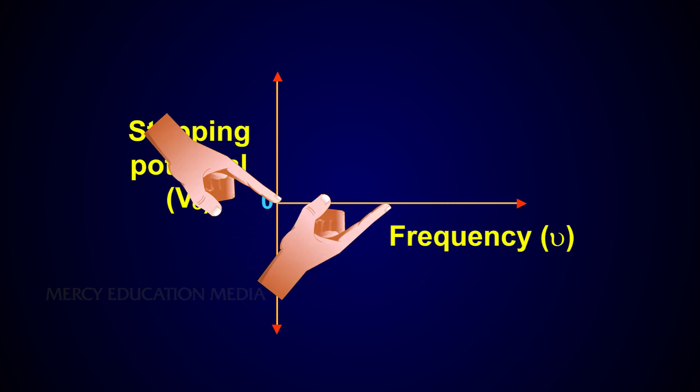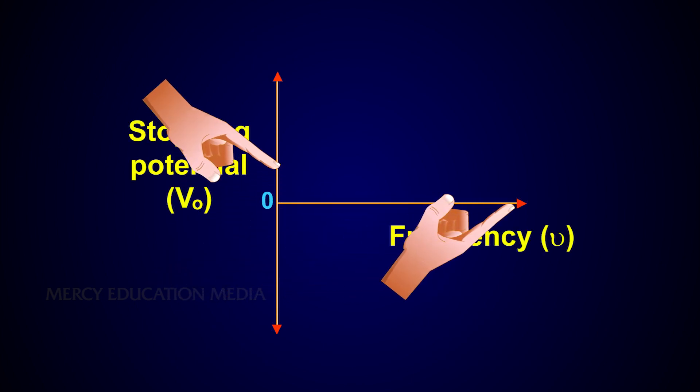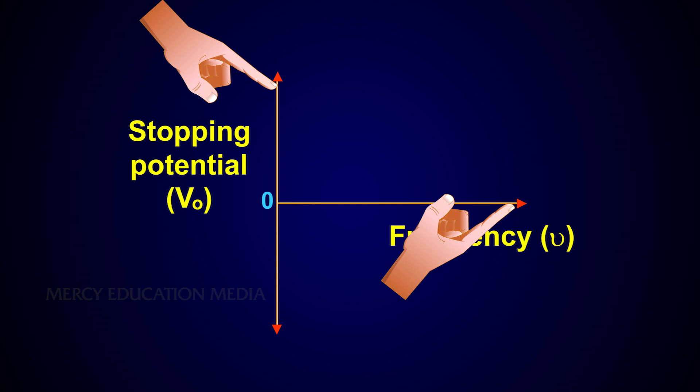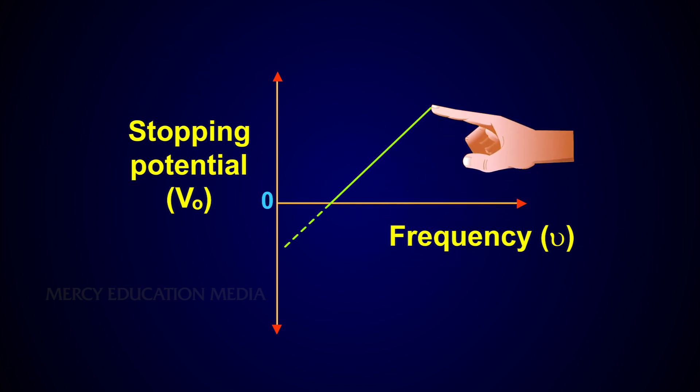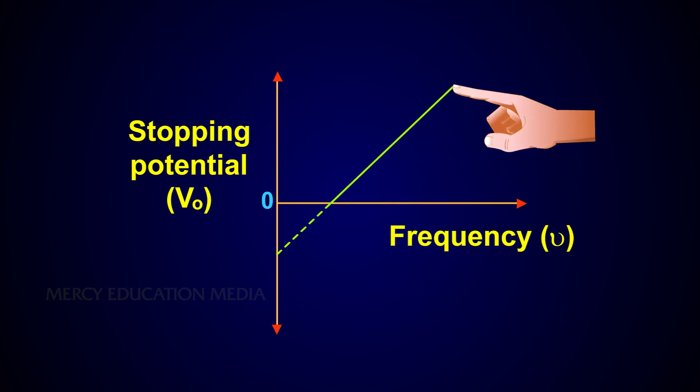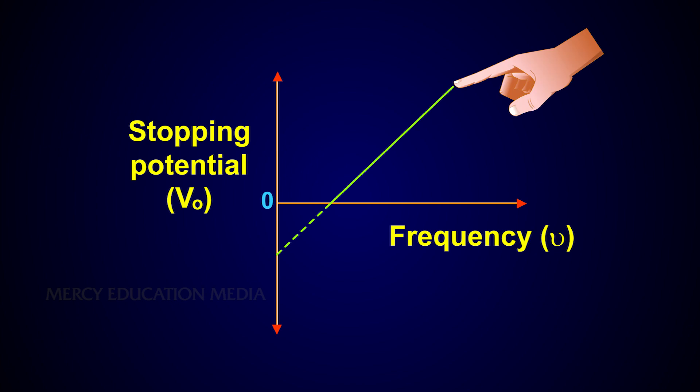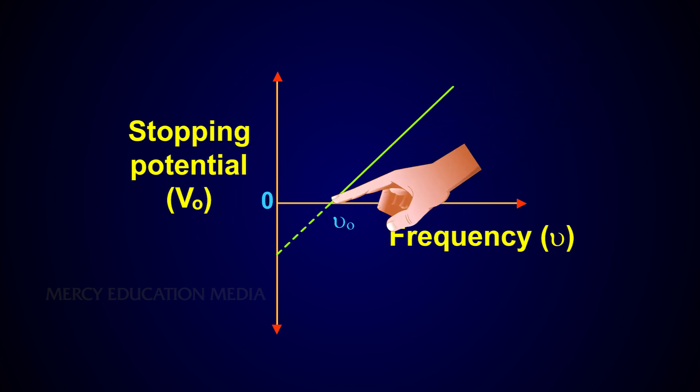If the frequency of the incident radiation is plotted against the corresponding stopping potential, a straight line is obtained as shown in the figure. From this graph, it is found that at a frequency nu0, the value of the stopping potential is zero.